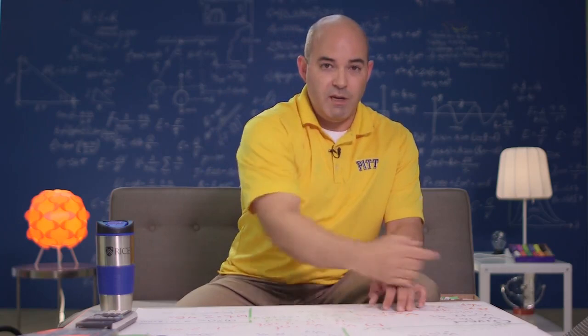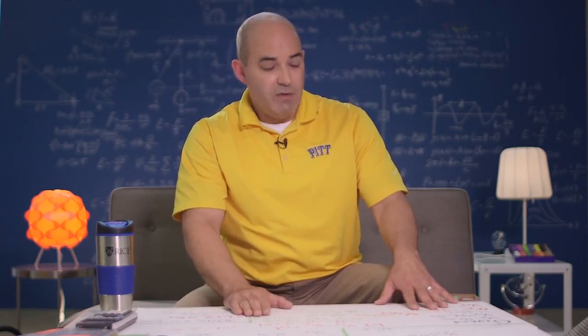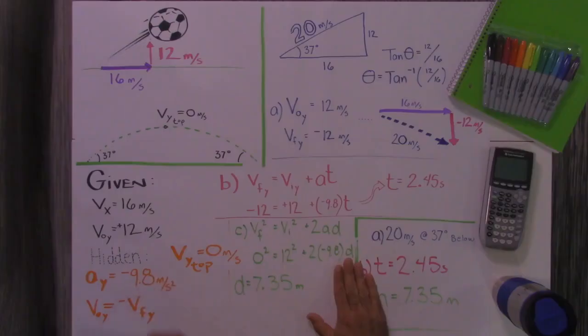So projectile motion, it's moving sideways and going up and down at the same time. So the up and down velocity is zero. That's a hidden given. The other one, the acceleration due to gravity, I'm going to use negative 9.8 this time.